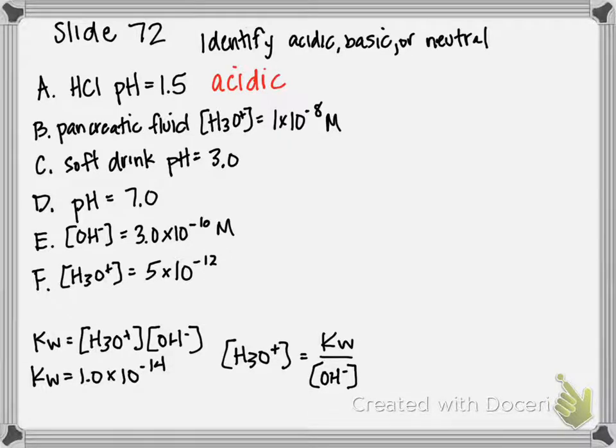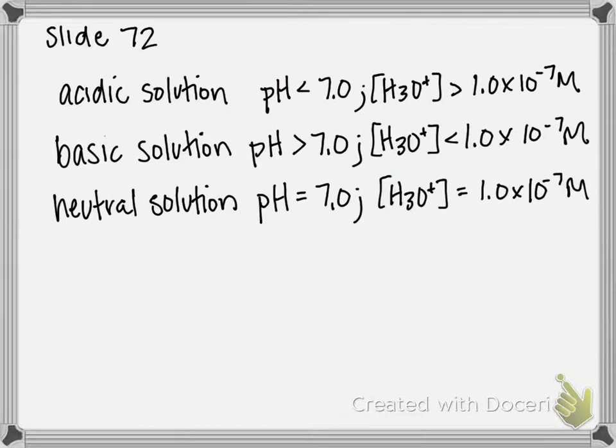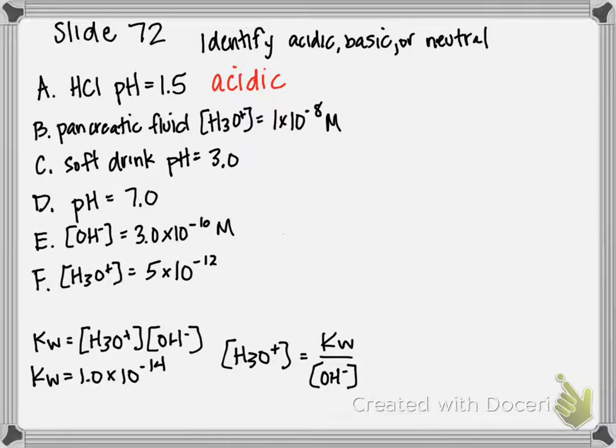For B, we're not given pH. We're given the hydronium ion concentration, 1×10^-8 molar. And so if we go back to our slide and consult it, that is not greater than 1×10^-7. It's less than, so therefore this solution is basic.